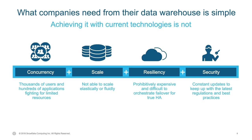Moving over to scale, one of the key requirements is the ability to elastically grow and shrink capacity as demands from your workload grow and shrink over time. The third area, resiliency: enterprise data warehouse configurations with existing technology are very complex, expensive, and hard to operate, and much of that complexity is owed to achieving high availability. Last but not least, security requirements keep constantly changing — just think of the more recent GDPR requirements that came out of Europe.